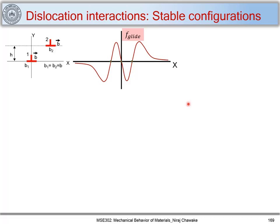In the last part we have seen an interaction between dislocations — interaction between two positive edge dislocations and also between a positive and a negative edge dislocation. We considered these dislocations lying on two parallel slip planes which are h distance apart, and we have seen what is a glide force on dislocation 2 because of the stress field of dislocation 1, and we have seen the nature of this glide force with respect to position x of dislocation 2 on its glide plane.